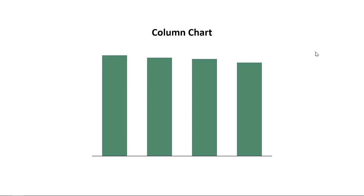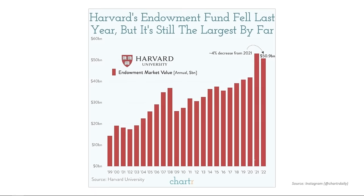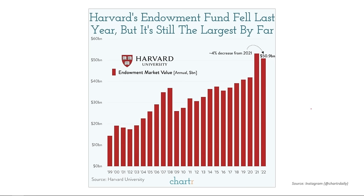The next chart is a column chart, and it's really similar to a bar chart in that it's easy to compare different categories against each other. The primary reason to use a column chart over a bar chart is that column charts are good for change over time — our brains naturally read them from left to right. Take a look at this example from Charter, showing changes in Harvard's endowment fund by year from 1999 through 2022. The focus is still on comparing individual columns — it says 4% decrease from 2021, emphasized with an arrow.